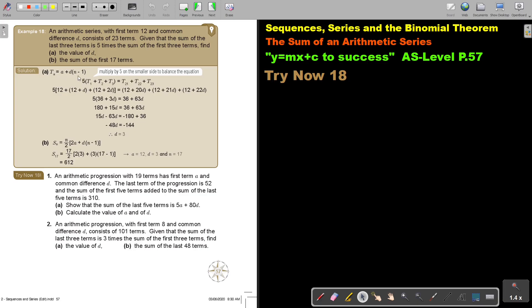So this is the formula to find T. I want to take a pen, I want to take red, I want to show you this statement. With first term 12 and common difference T, consist of 23 terms. Given that the sum of the last three terms is 5 times the sum of the first three terms.